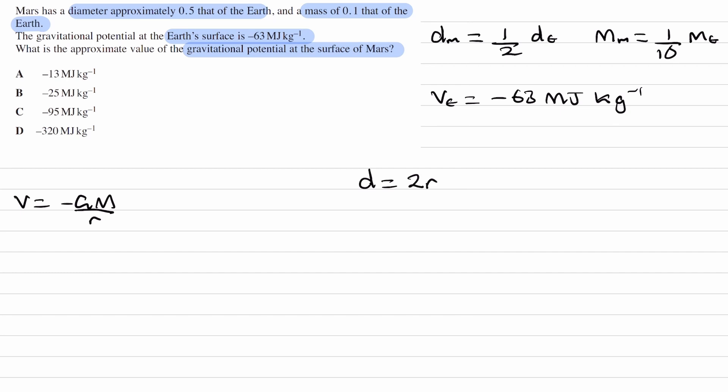So we'd be replacing this with 2 times the radius of Mars, this with 2 times the radius of Earth. The 2s will cancel and that equation becomes the radius of Mars is equal to a half of the radius of Earth.